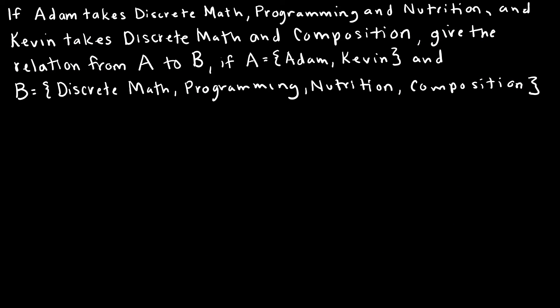So if Adam takes discrete math, programming and nutrition and Kevin takes discrete math and composition, give the relation from A to B. And again A would be Adam, Kevin, and B would be discrete math, programming, nutrition, composition. So really what we would be doing here is just giving all of the ordered pairs.